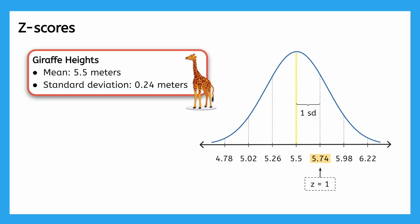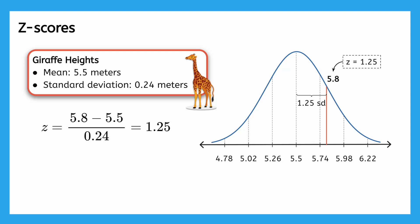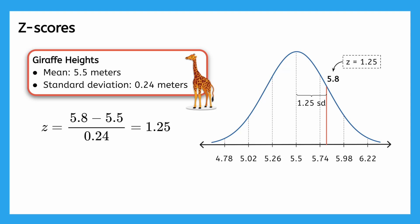Similarly, 5.02 is two standard deviations to the left of the mean, therefore it has a z-score of negative 2. What about a giraffe that is 5.8 meters tall? We calculate its z-score by subtracting 5.5 from 5.8, then dividing by 0.24, giving us 1.25. So the z-score for a giraffe that is 5.8 meters tall is positive 1.25, which means that the height of this giraffe is 1.25 standard deviations above the mean.